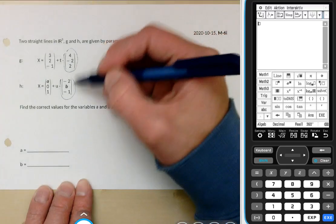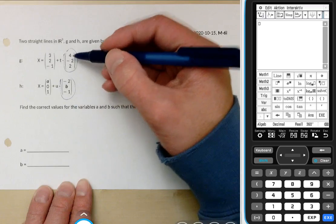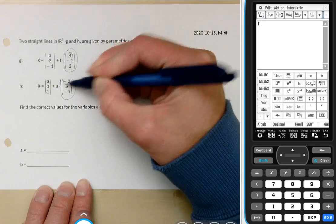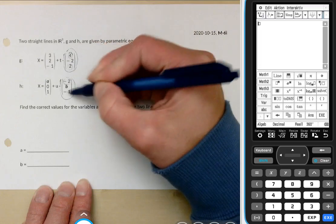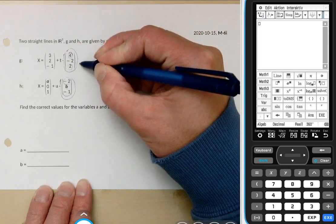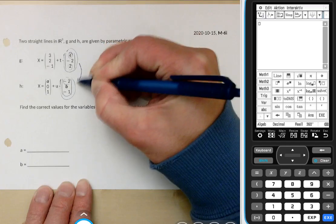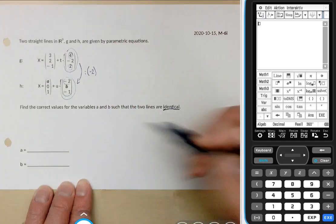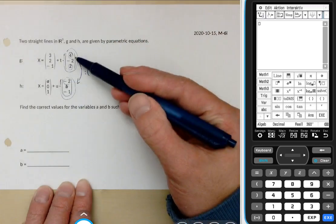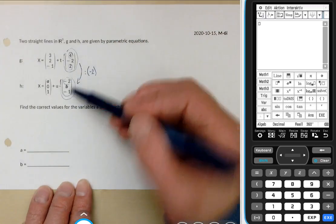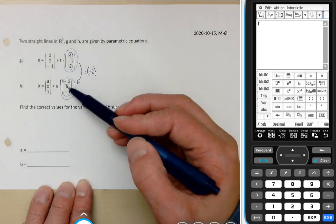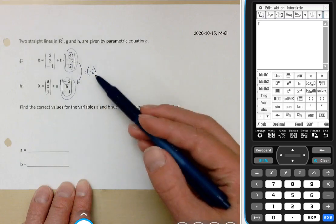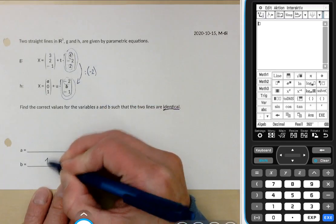If you compare the direction vectors then you will see that you have for instance 4 here and -2 here, 2 here, -1 here, that you can come from the first to the second by a division by -2. So it's always half of the first one and the sign changes. So b has to be 1 because you have -2 here divided by -2 that's 1 for b.